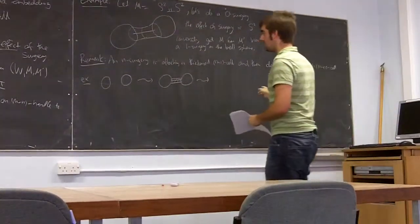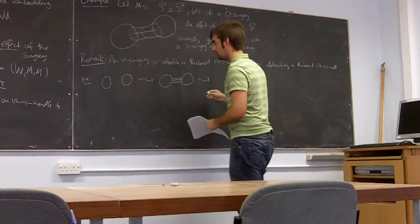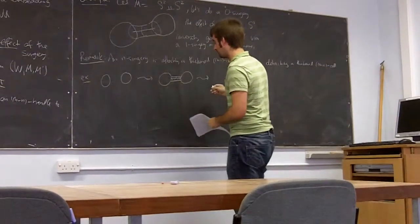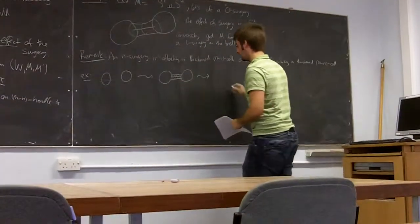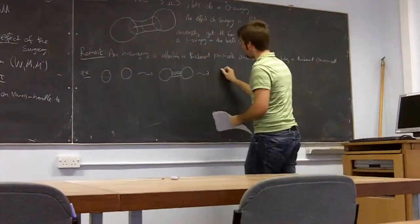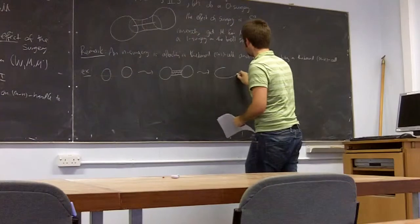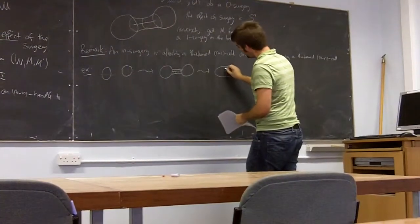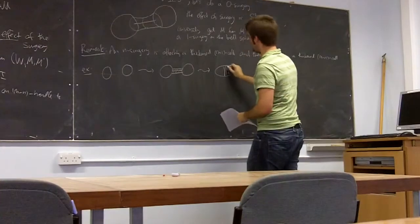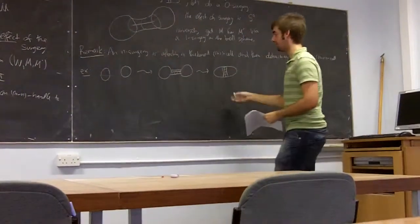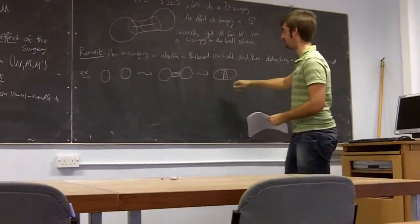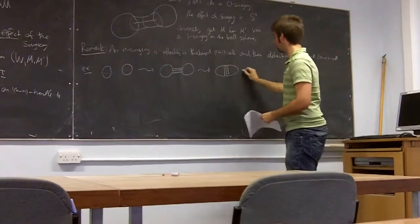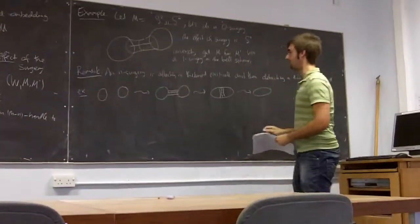So in this case it's again a one-cell, and then you're meant to view it like this — with this attached to the interior. This is then the belt sphere, which you detach, and you end up with one circle.